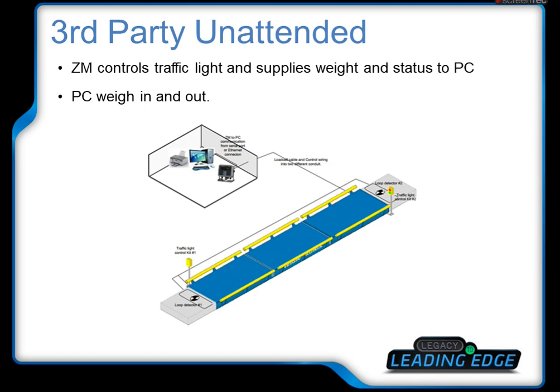The fifth type is what we call third-party or tendon. The ZAM indicator controls the traffic light and reads the status from sensors, then supplies the weight and status to the PC. The PC can be used for weigh in and weigh out.